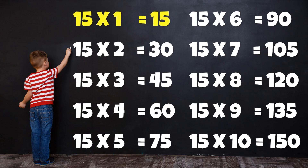Table of 15: 15×1=15, 15×2=30, 15×3=45, 15×4=60, 15×5=75, 15×6=90, 15×7=105, 15×8=120, 15×9=135, 15×10=150.